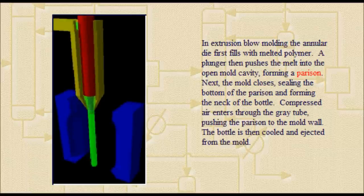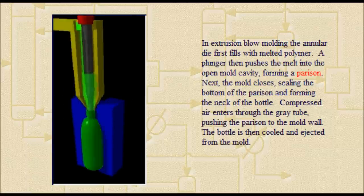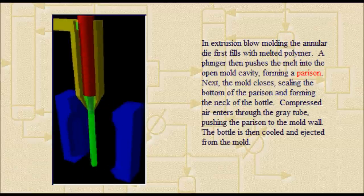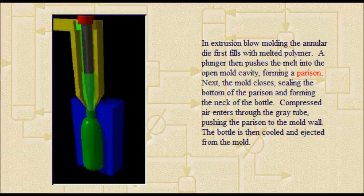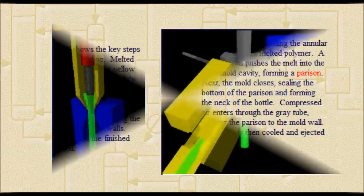Next, the mold closes, sealing the bottom of the parison and forming the neck of the bottle. Compressed air enters through the gray tube, pushing the parison to the mold wall. The bottle is then cooled and ejected from the mold.